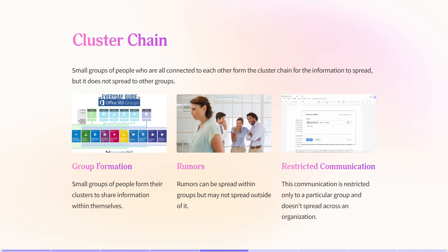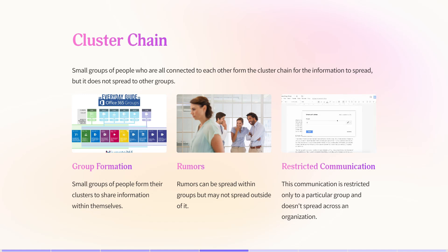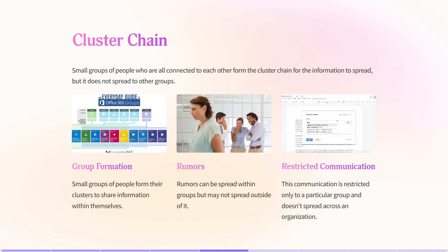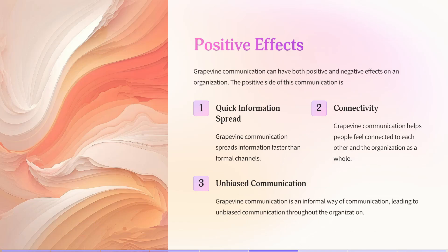The next is the cluster chain. Here, small groups of people who are all connected to each other form a cluster, and information spreads within the cluster but does not spread to other groups. It can occur through rumors, restricted communication, or group formation. For example, suppose there is a change of leadership or a new job opening — this communication might be restricted to a certain set of people, or it spreads as rumors that a new job is coming and that certain people are interested in it.